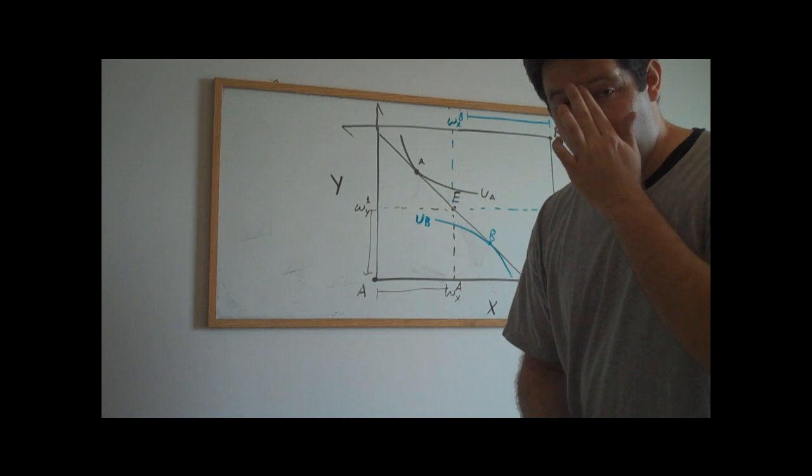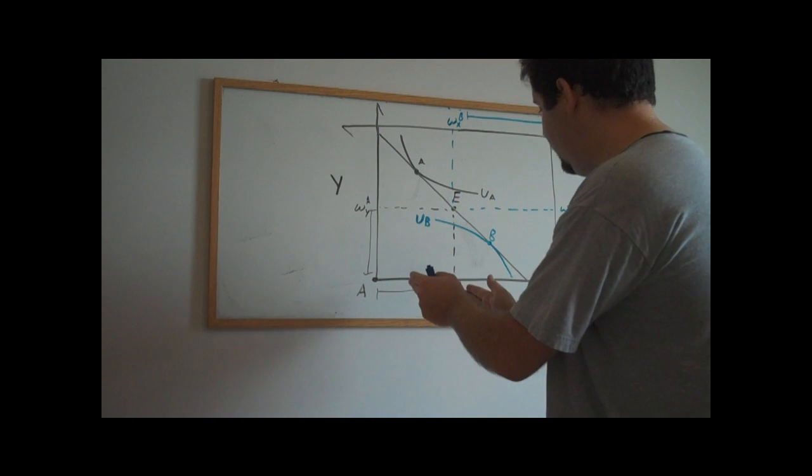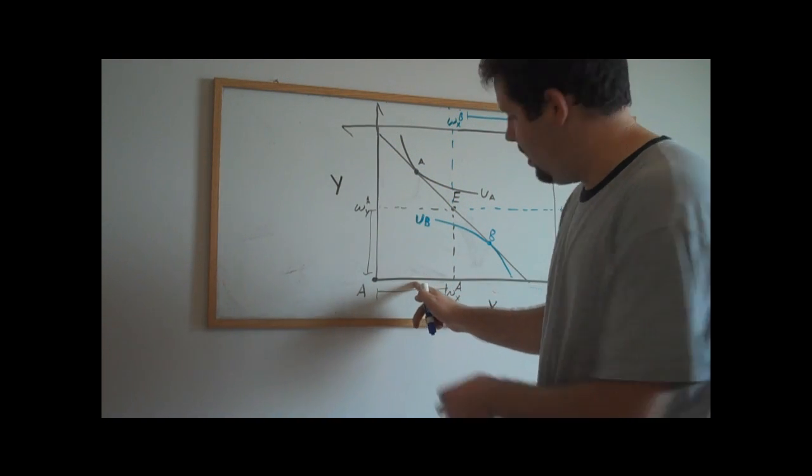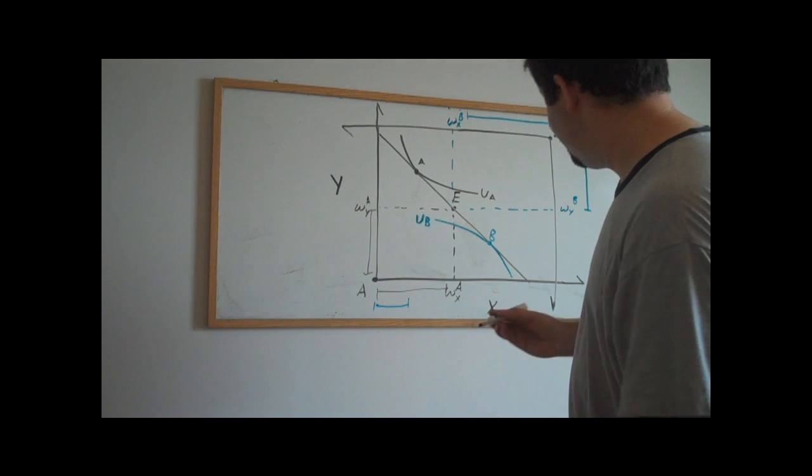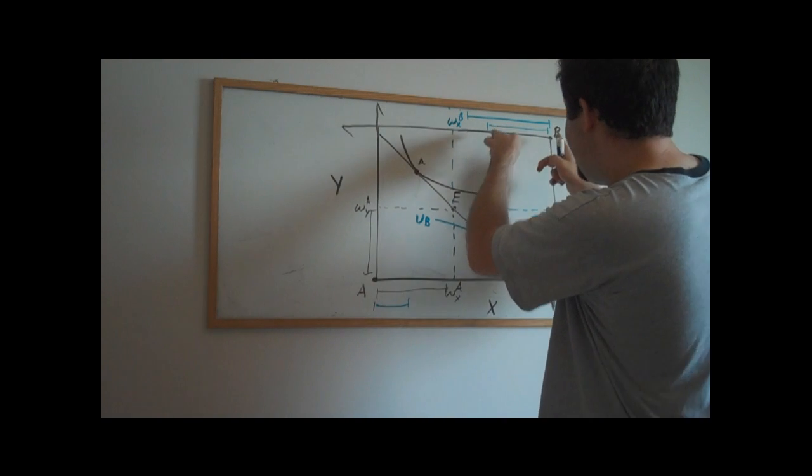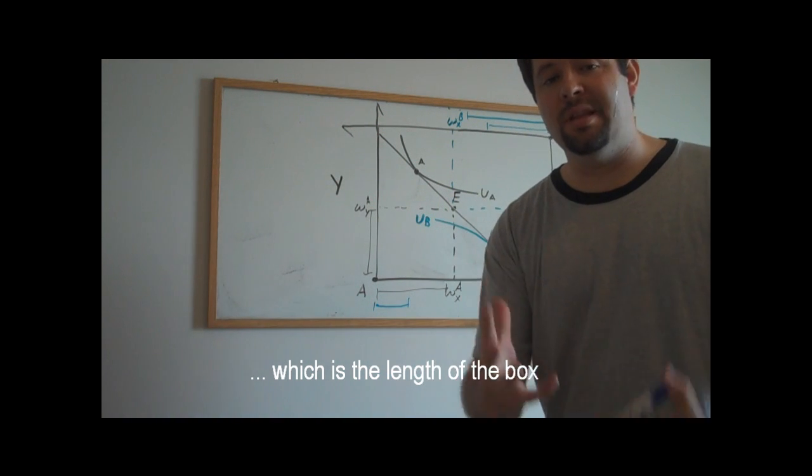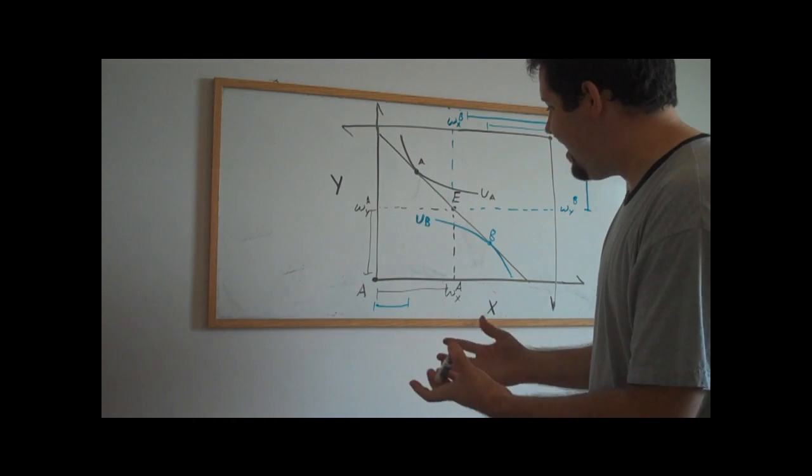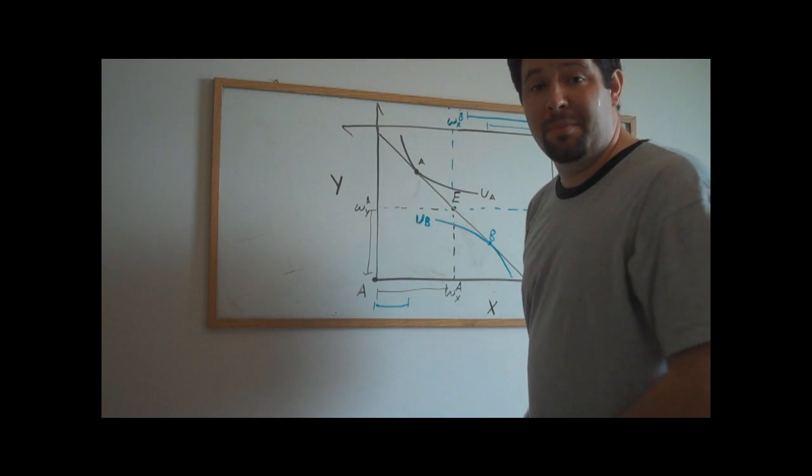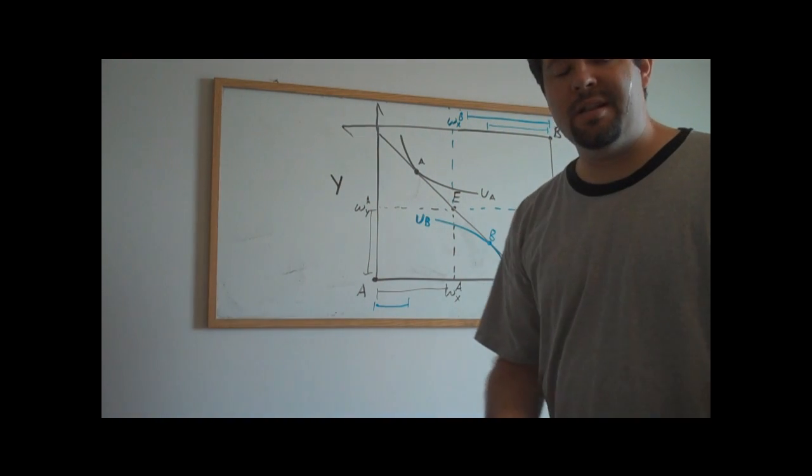But notice that we're going to run into a problem if this is actually the budget line defined by the market prices. If we look at how much of X is actually demanded, what we'll see is that there's this much X demanded by individual A, and there's this much X demanded by individual B. Now, this line segment and that line segment clearly don't add up to the total endowment of X. And so what's going to have to happen for equilibrium to occur in this market is we're going to have to have demand, the amount that each individual demands in their optimal consumption bundle, equal the supply, which is the total endowment in this economy. And so demand is too little, so let's go ahead and decrease the price.